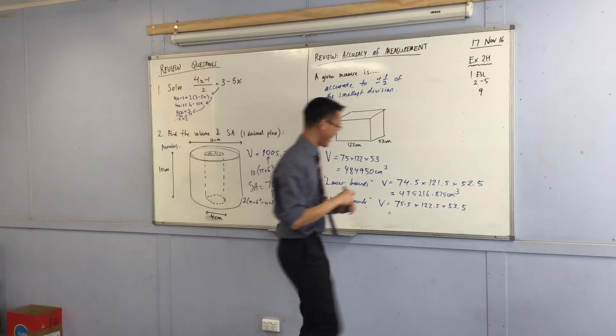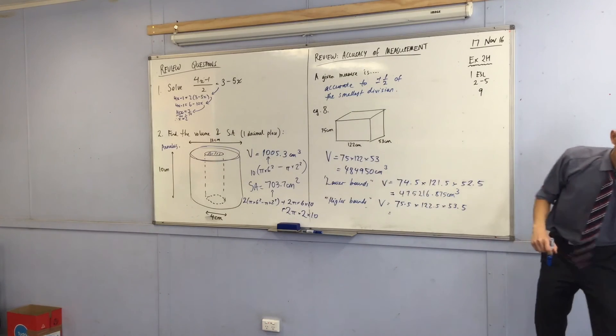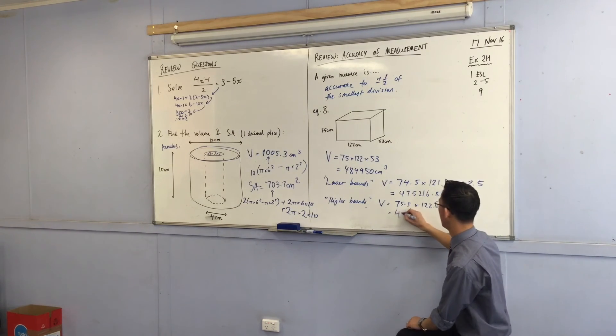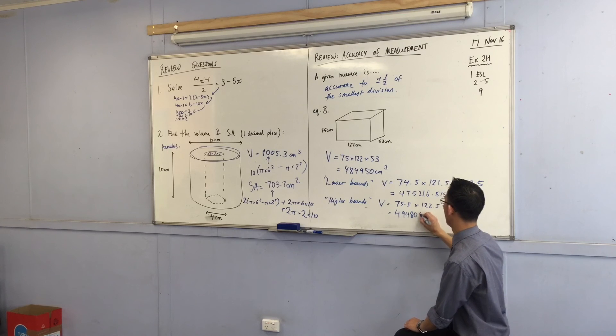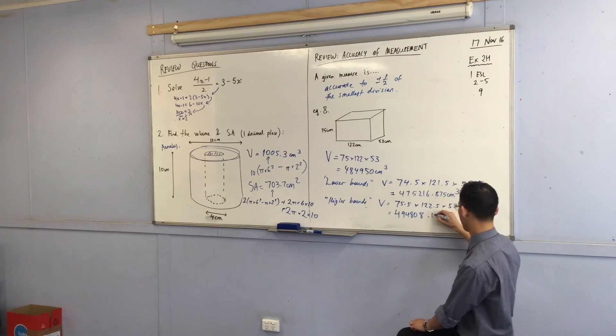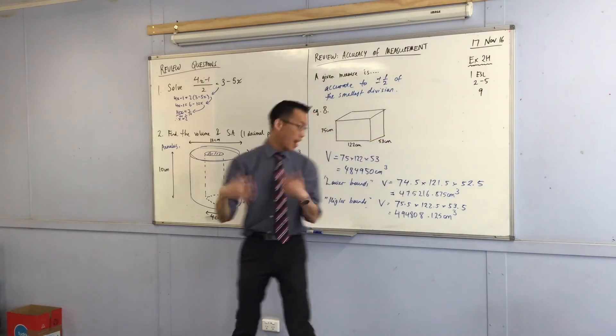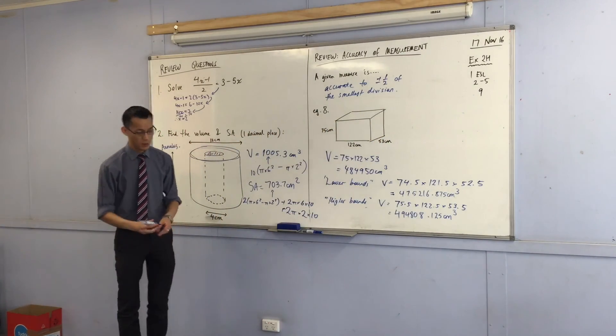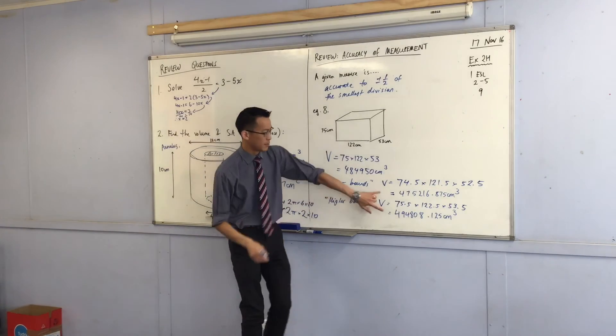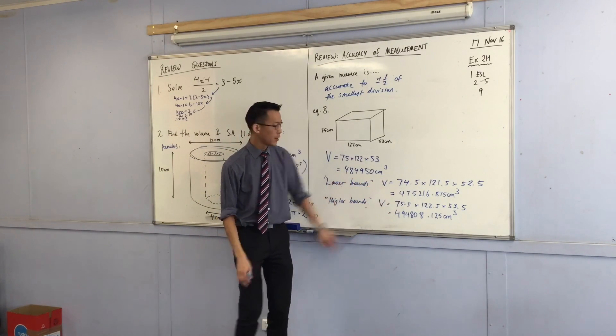494808.125. So again, we've gone up about 10,000 cubic centimeters, which is the same kind of, a similar kind of margin that we experienced over there.